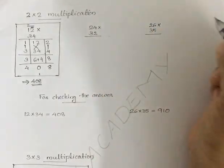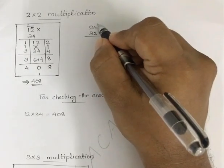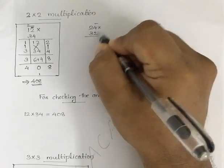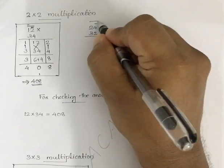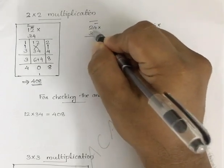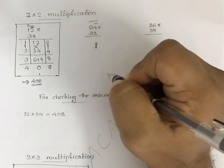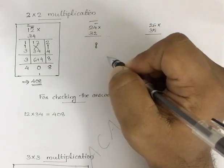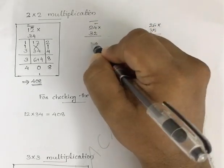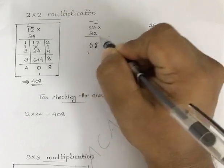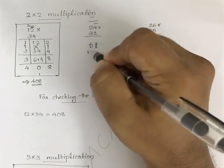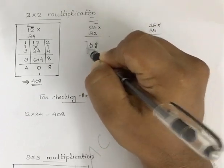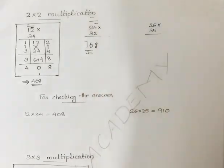Another example: 24 into 32. First, 4 into 2 is 8. Then 2 times 2 plus 4 times 3 — that is 4 plus 12 equals 16. Write 6, and 1 is a carry. Last, 2 times 3 is 6 plus 1 carry is 7. The answer is 768.